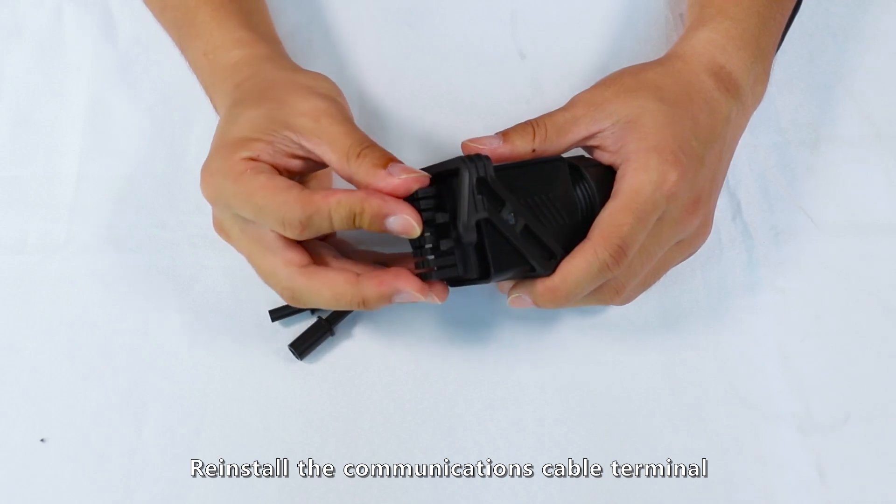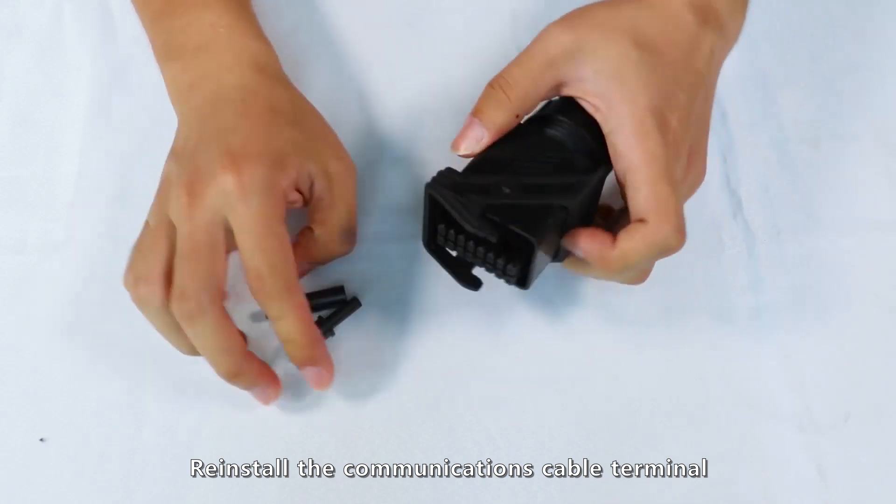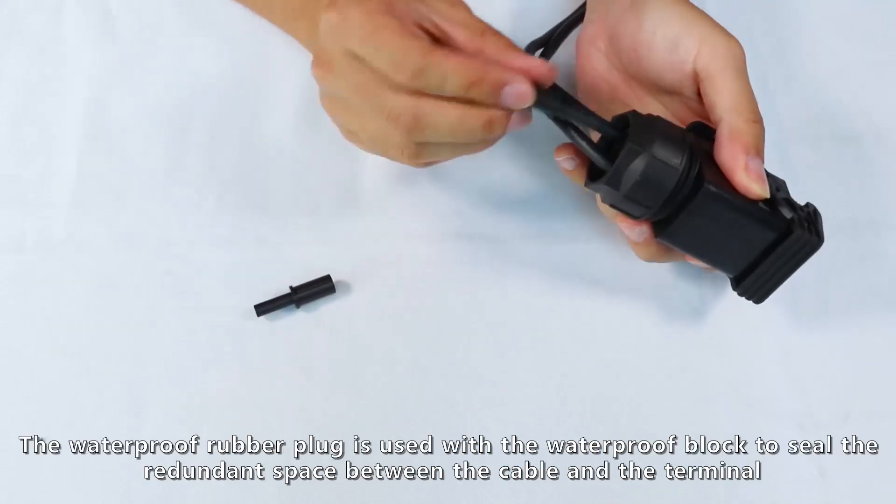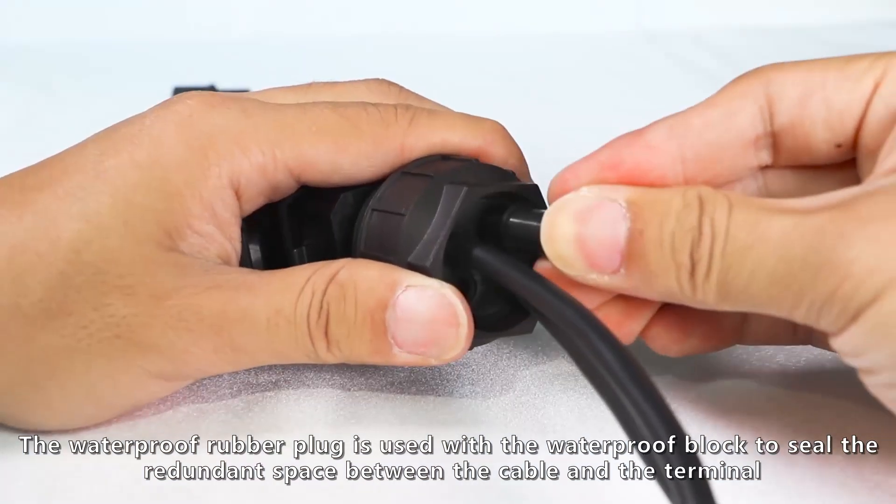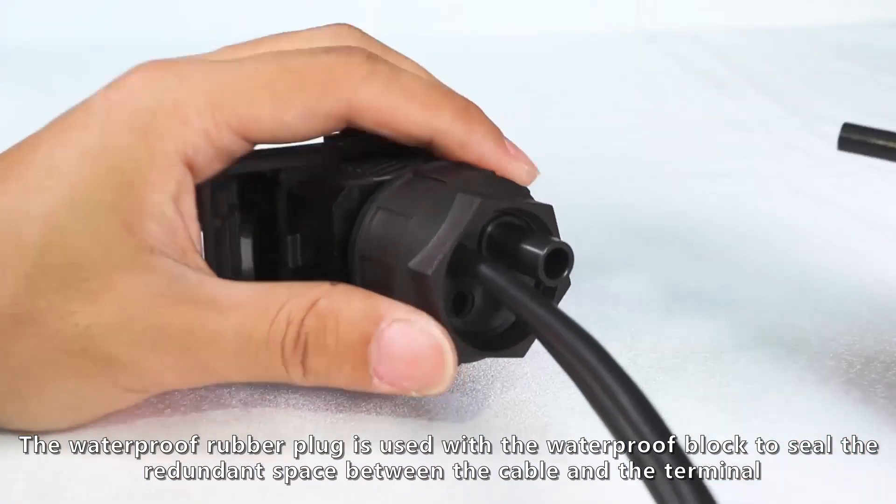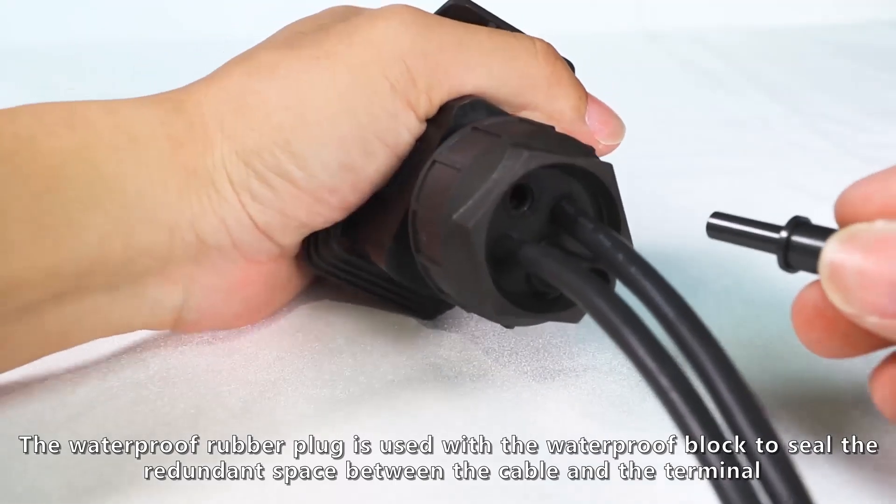Reinstall the communications cable terminal. The waterproof rubber plug is used with the waterproof block to seal the redundant space between the cable and the terminal.